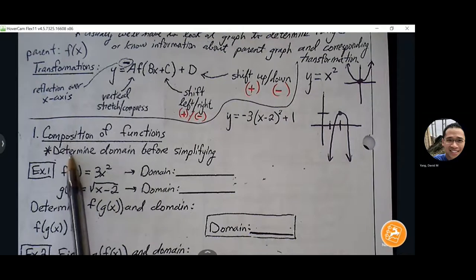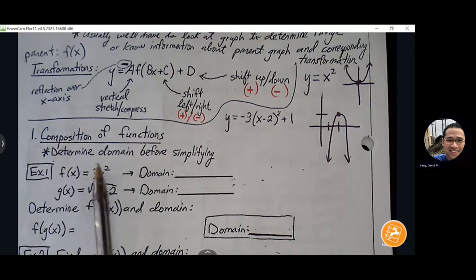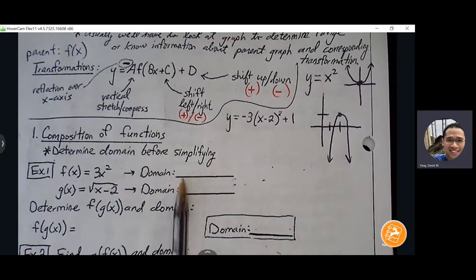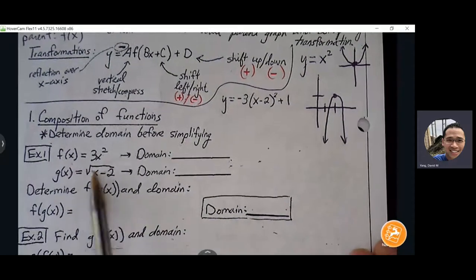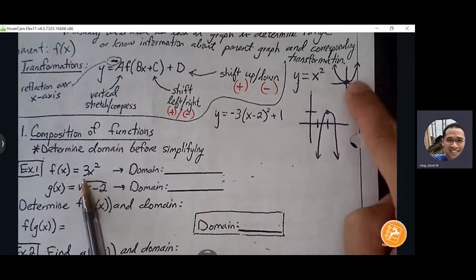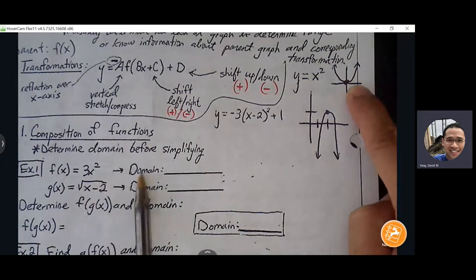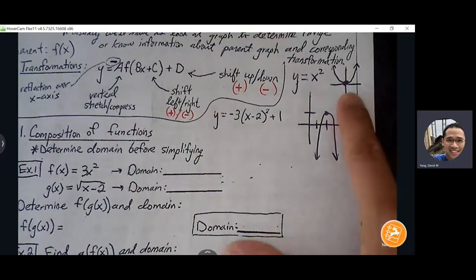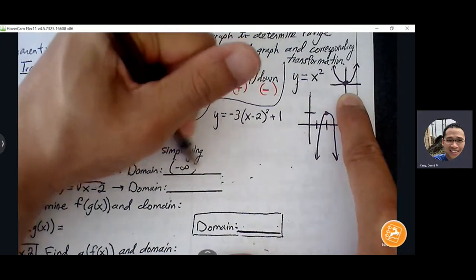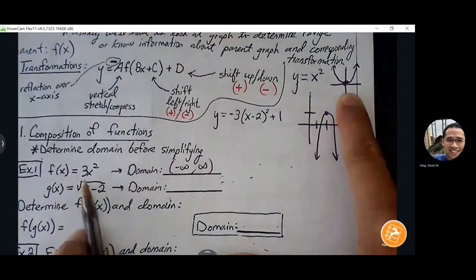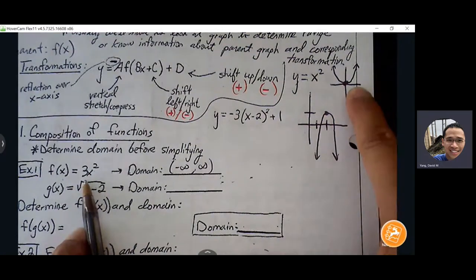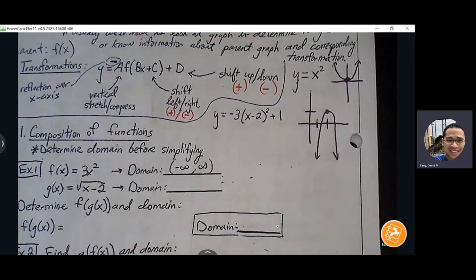Compositions of functions is where we insert one function into another. We want to determine the domain before simplifying. For 3x², that's a parabola that opens up — the graph stretches infinitely left and right without a break, so the domain is negative infinity to positive infinity. It's just a more narrow version of x², but the domain will be the same.